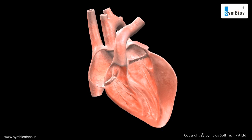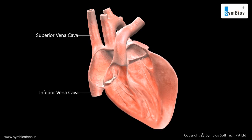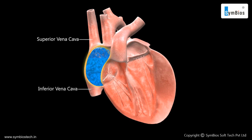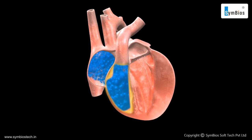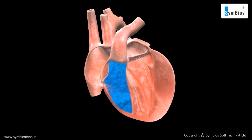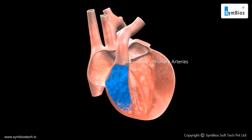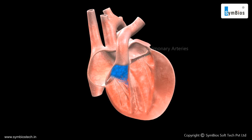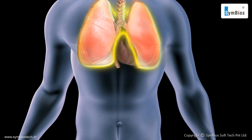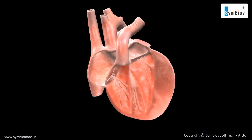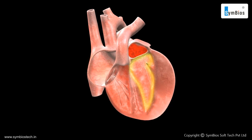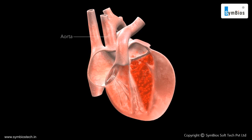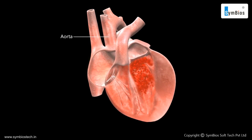The deoxygenated blood returns to the heart after circulating through the body. It enters the heart through the superior and inferior vena cava into the right atrium and passes through the right ventricle. The right ventricle pumps the blood into the lungs through the pulmonary arteries. The lungs refresh this blood with oxygen, and this oxygen-rich blood enters the left atrium, then the left ventricle, which pumps it through the aorta to the rest of the body.